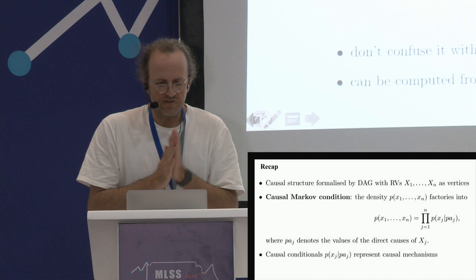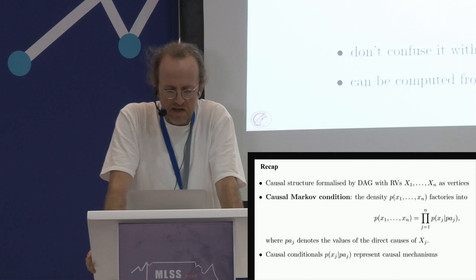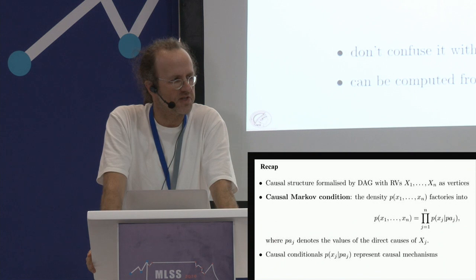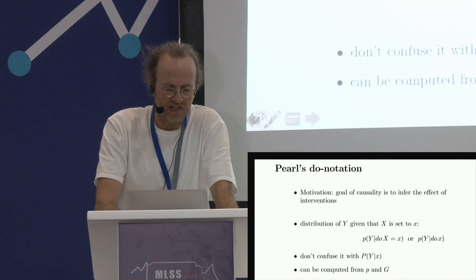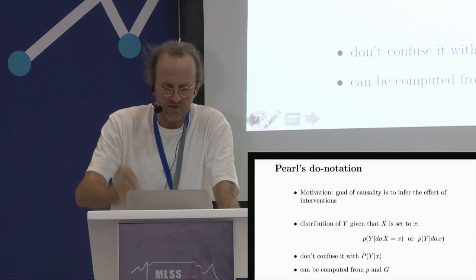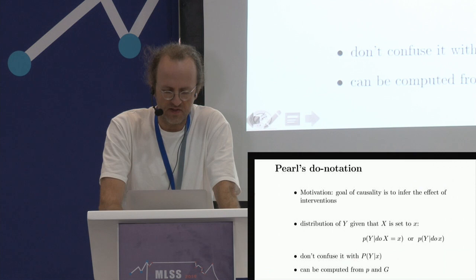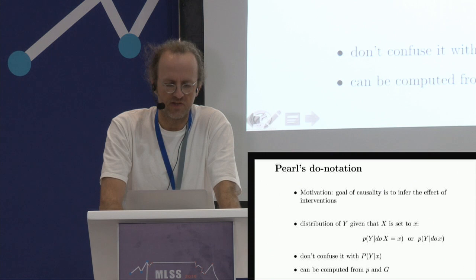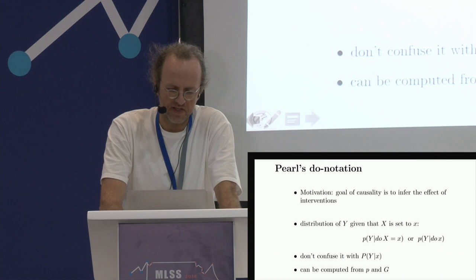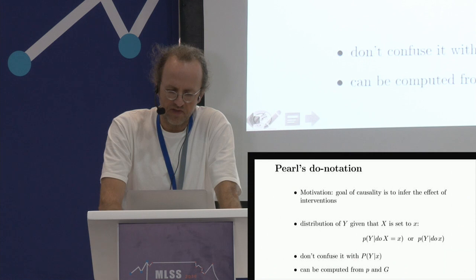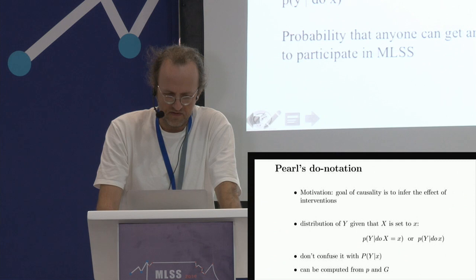I want to tell you about the do-notation. This already came up yesterday in the panel discussion, and it's actually something very simple — nothing to be afraid of. Ferens mentioned yesterday that some of this stuff looks a little opaque, but in the end it's not that complicated. In a way you already know everything you need to know about it. The do-notation is how we write the distribution of a variable given that some other variable is set to a fixed value.